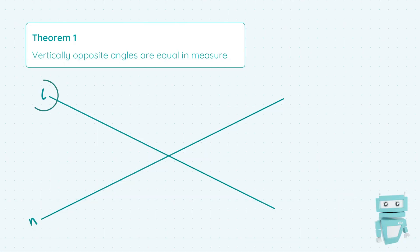So here we have the lines L and N, and when they intersect they create four angles. This theorem states that the angles which don't touch, or the ones that are opposite one another, are equal.